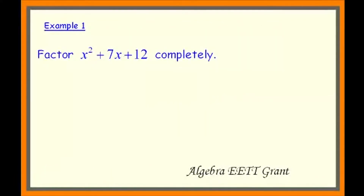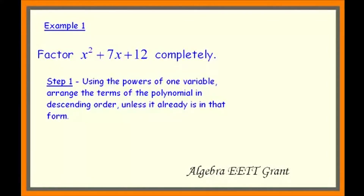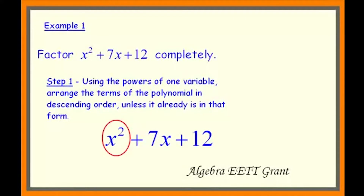For example 1, we're going to factor x squared plus 7x plus 12 completely. There are some steps we need to go through every time we factor a trinomial. Step 1 is using the powers of one variable to arrange the terms of the polynomial in descending order, unless it is already in that form. In our case, x squared is the highest exponent, 7x is the middle, and 12 is our constant. So we're already in order.